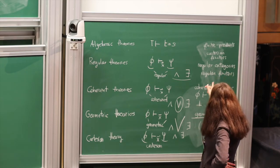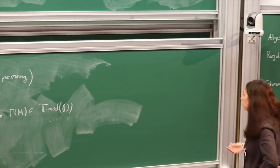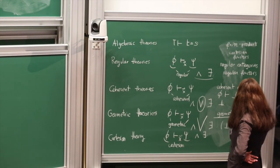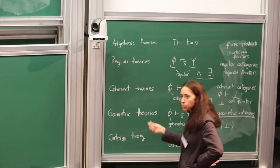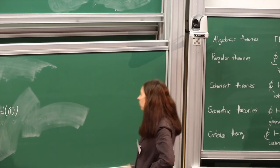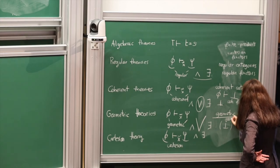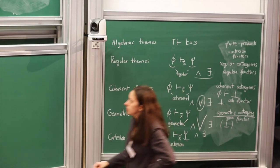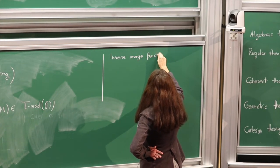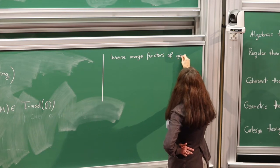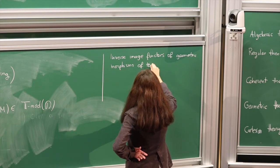What is a regular functor? It is a functor that is both Cartesian and image preserving — it transforms images into images. For coherent categories, you need a coherent functor, which is a regular functor that moreover preserves finite unions of subobjects. The infinitary analogy of coherent is the notion of geometric functor, and it is very important to remark that the inverse image functors of geometric morphisms are geometric.